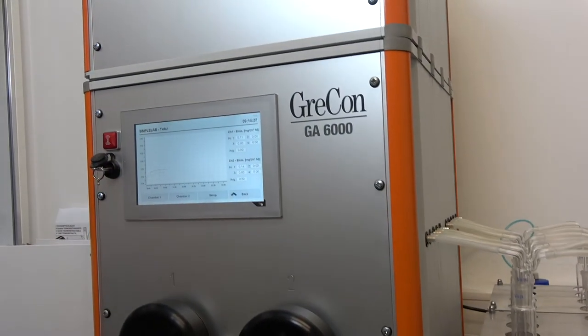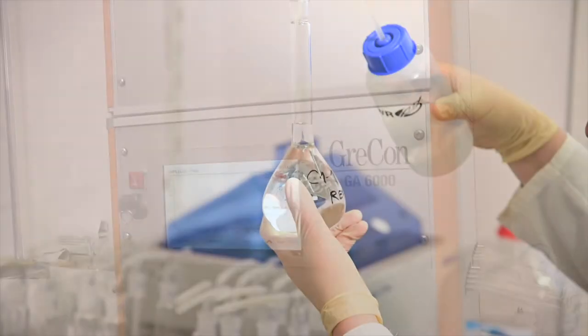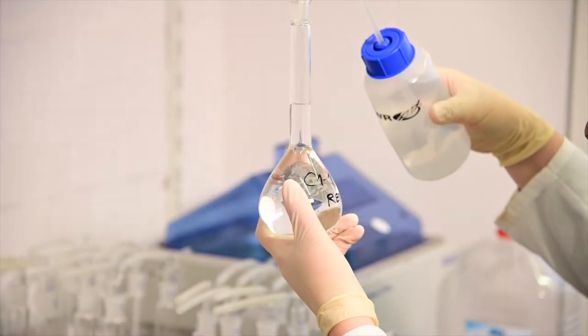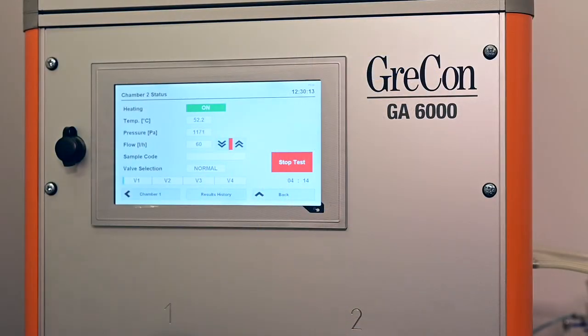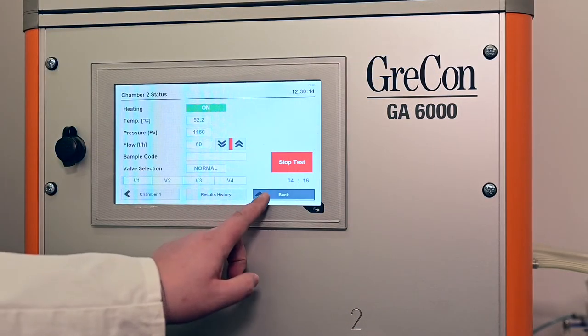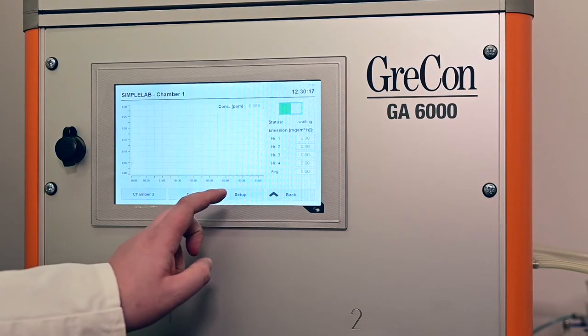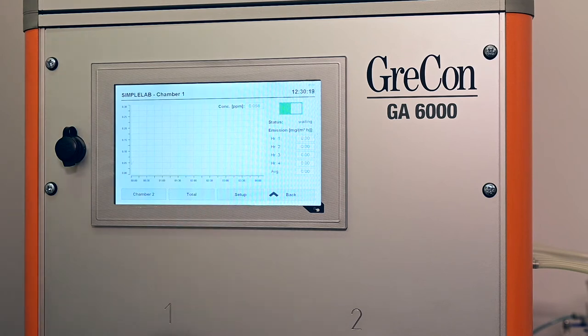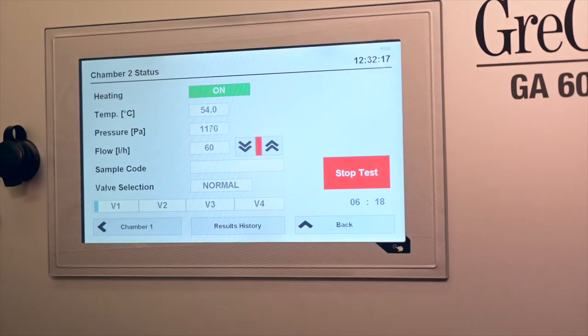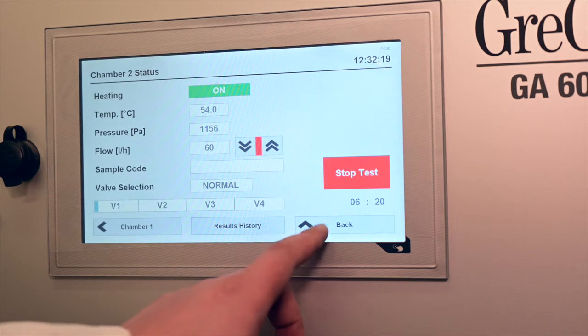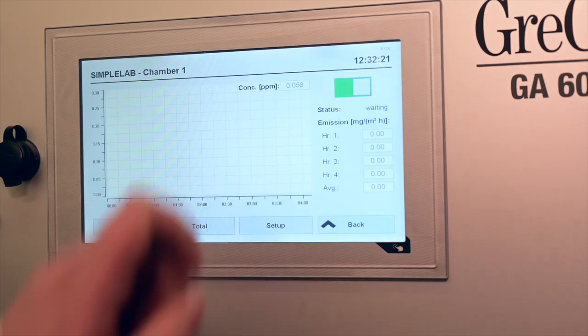With the help of the GA-6000, wood-based material manufacturers can ensure that their products meet the legal requirements within the scope of quality control. The gas analysis method provides a reliable correlation to the reference test chambers, particularly for low emitting products. How does the GA-6000 work exactly?